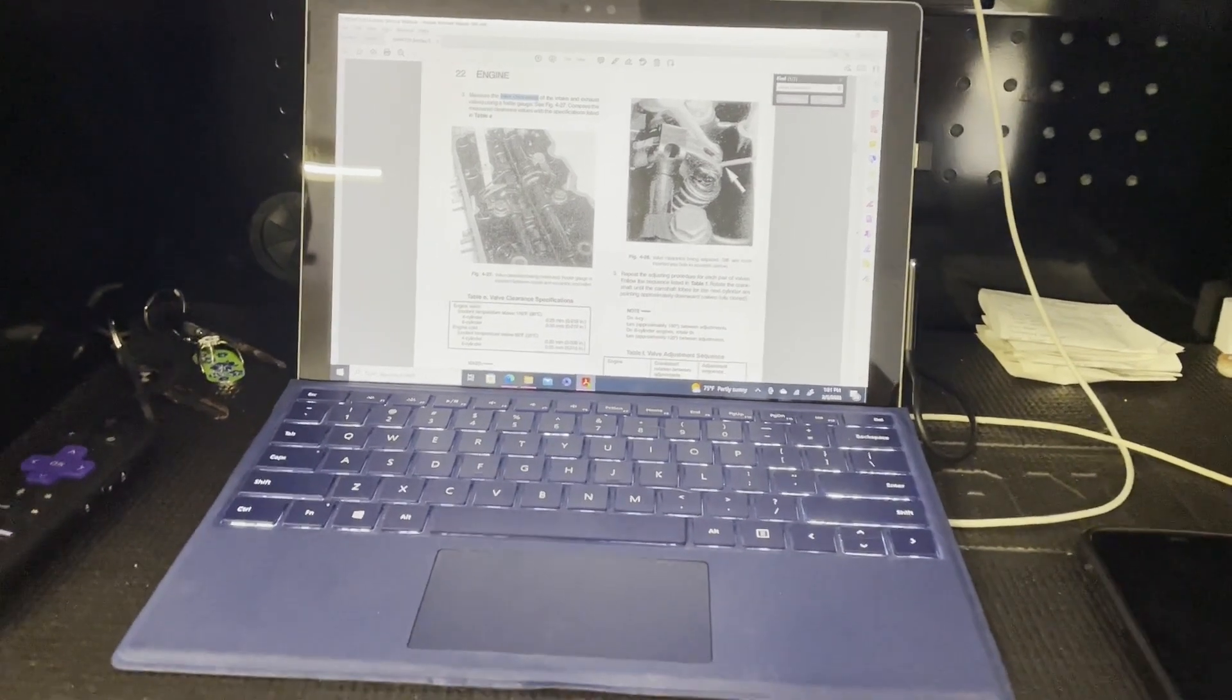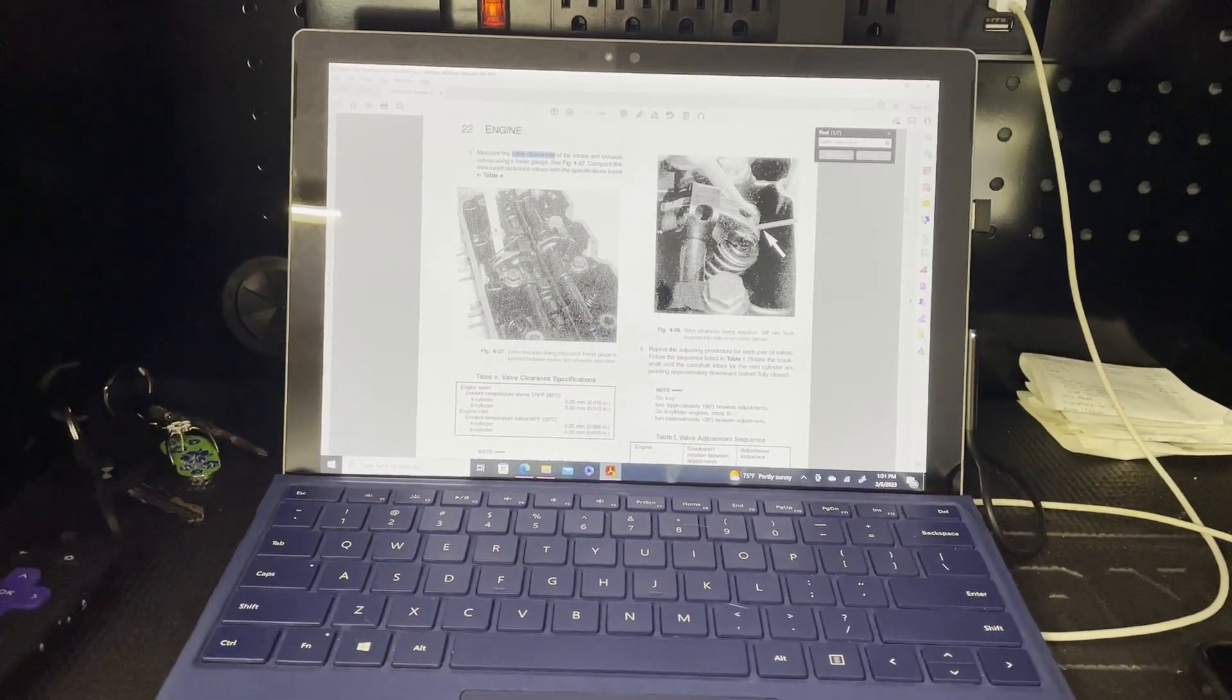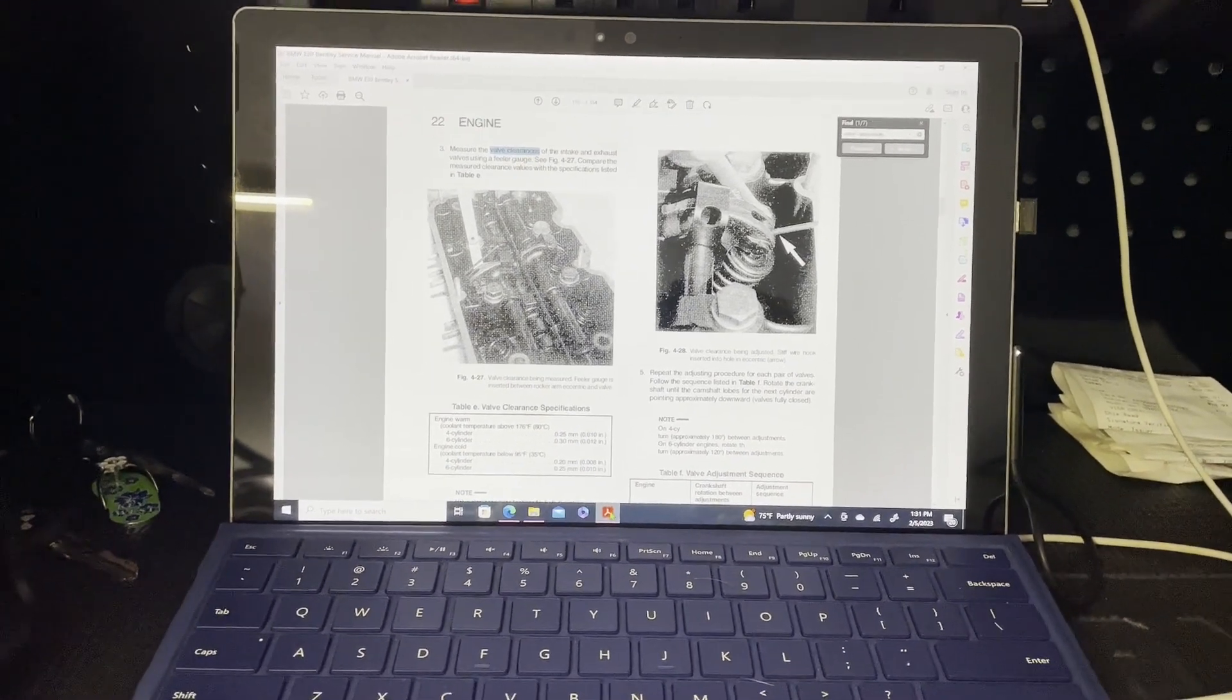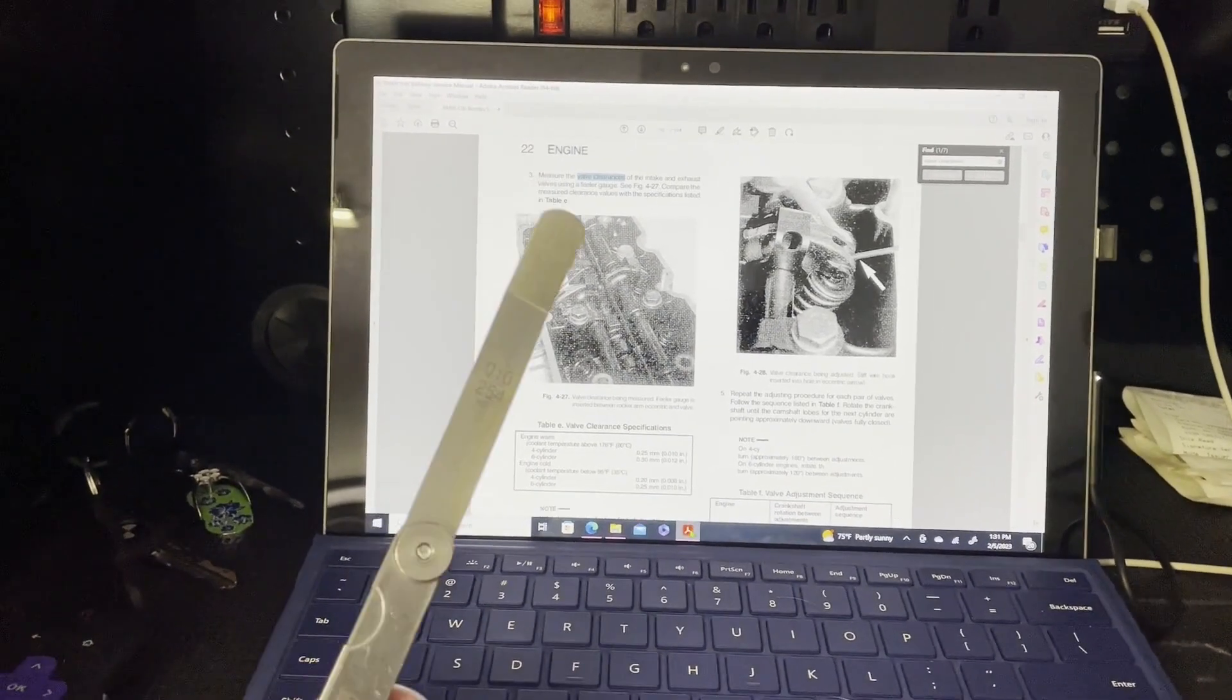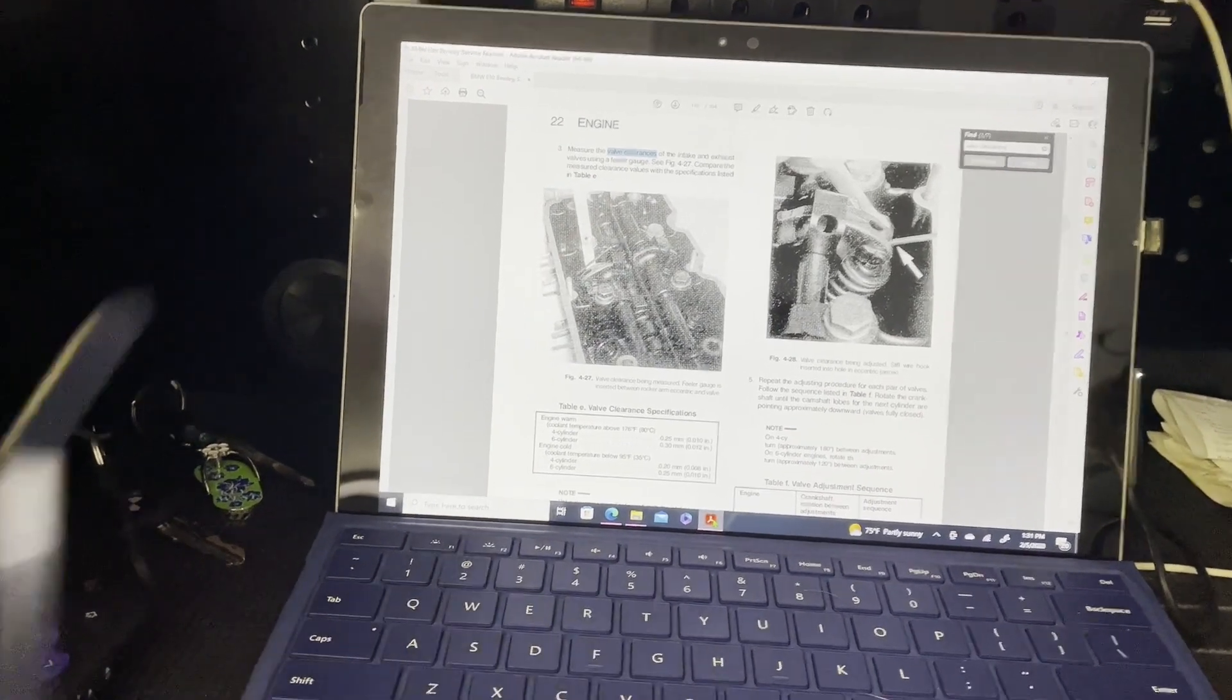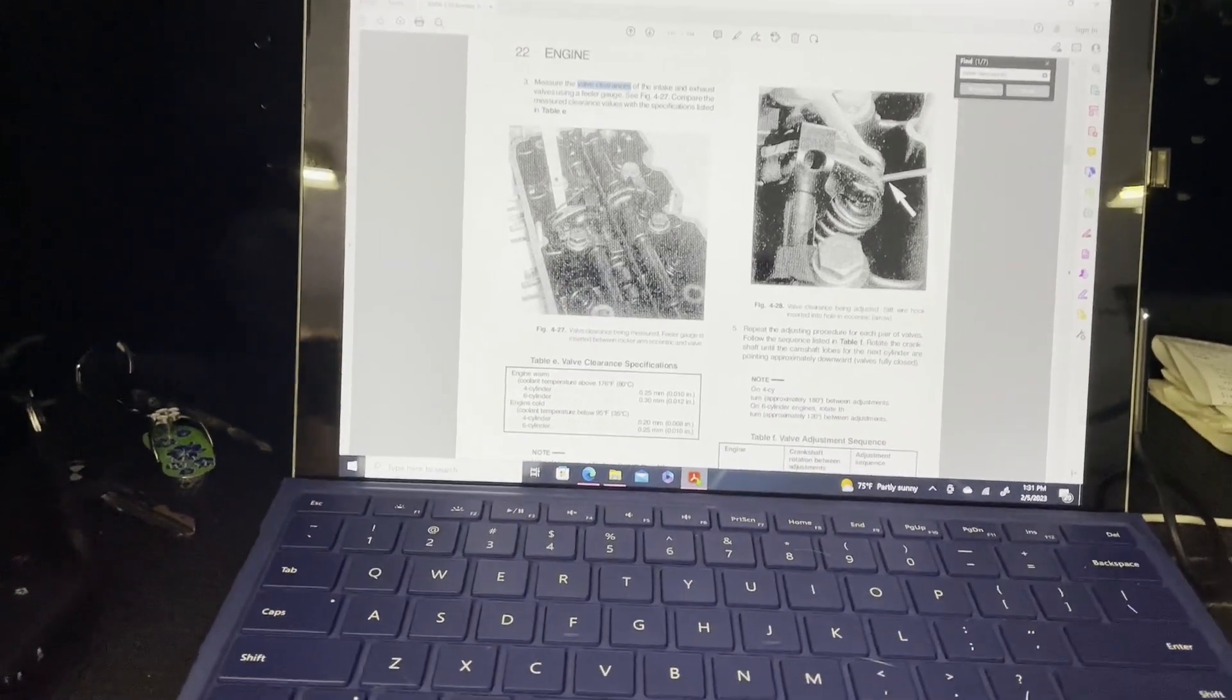As we get ready to do the valve clearance piece of this, I pulled up the soft copy of the Bentley manual here, figured out what clearances we need. For this motor, the V6, it is 0.01 inches or 0.25 millimeters. We've got our tool, this feeler gauge from O'Reilly's, six bucks or something like that. It came with this bend in it, which we're told is really optimal for trying to do this particular motor and what we're doing. So I think we're all set on that.